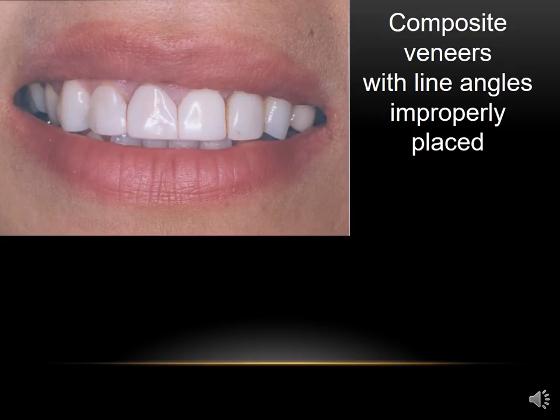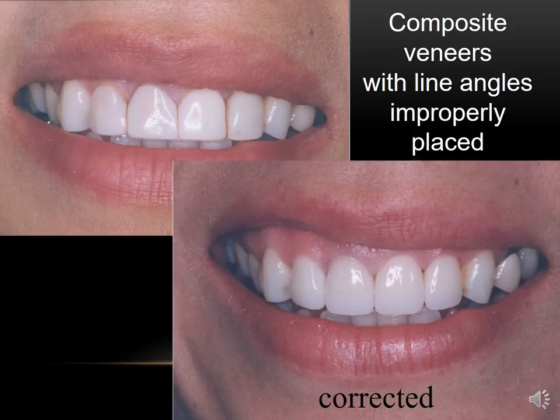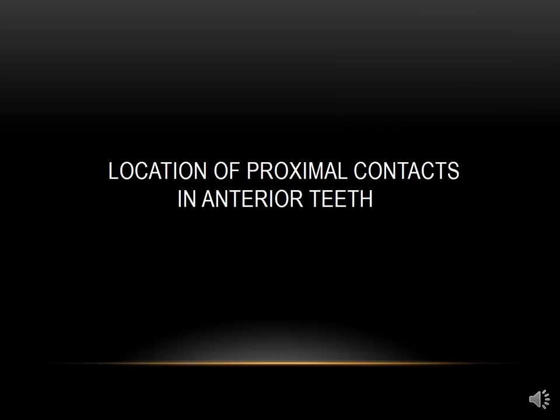Now that it's redone and the line angles are placed properly, the curvatures are placed properly, and the laterals are made slightly shorter than the centrals, you can see there's a tremendous difference. These are the kinds of things we need to pay attention to when doing diastema closures or composite veneers.